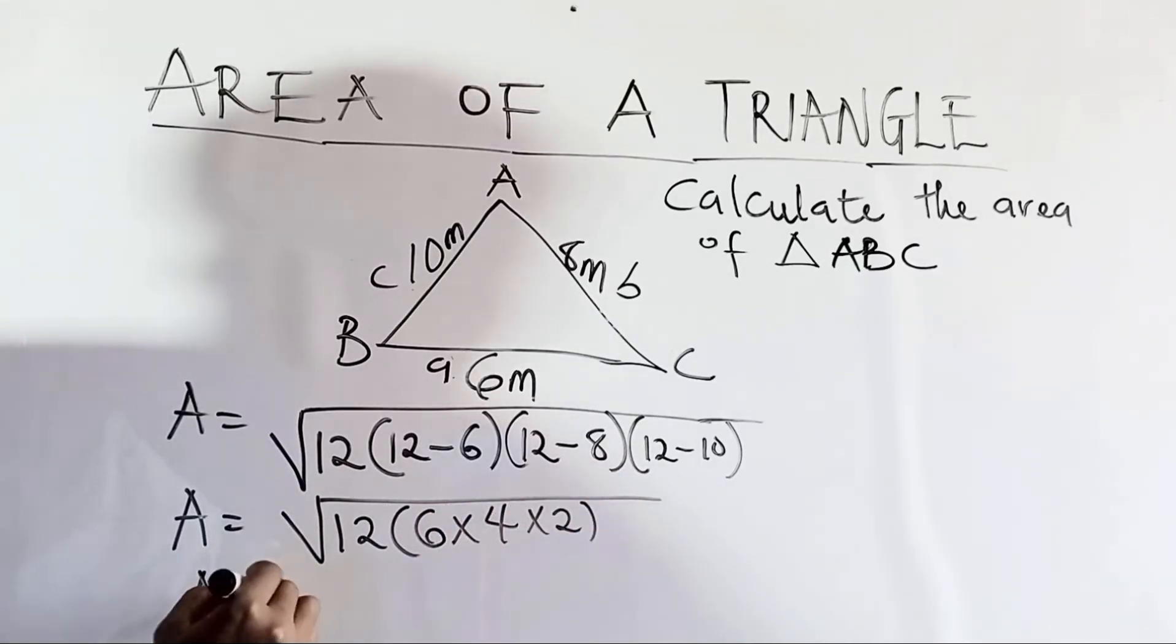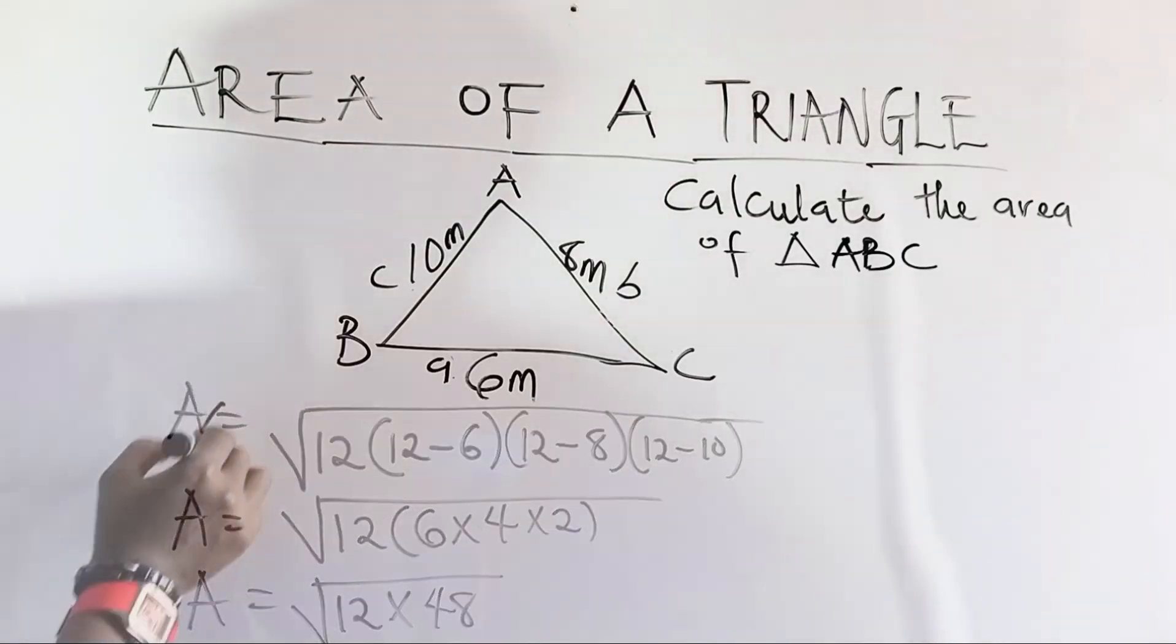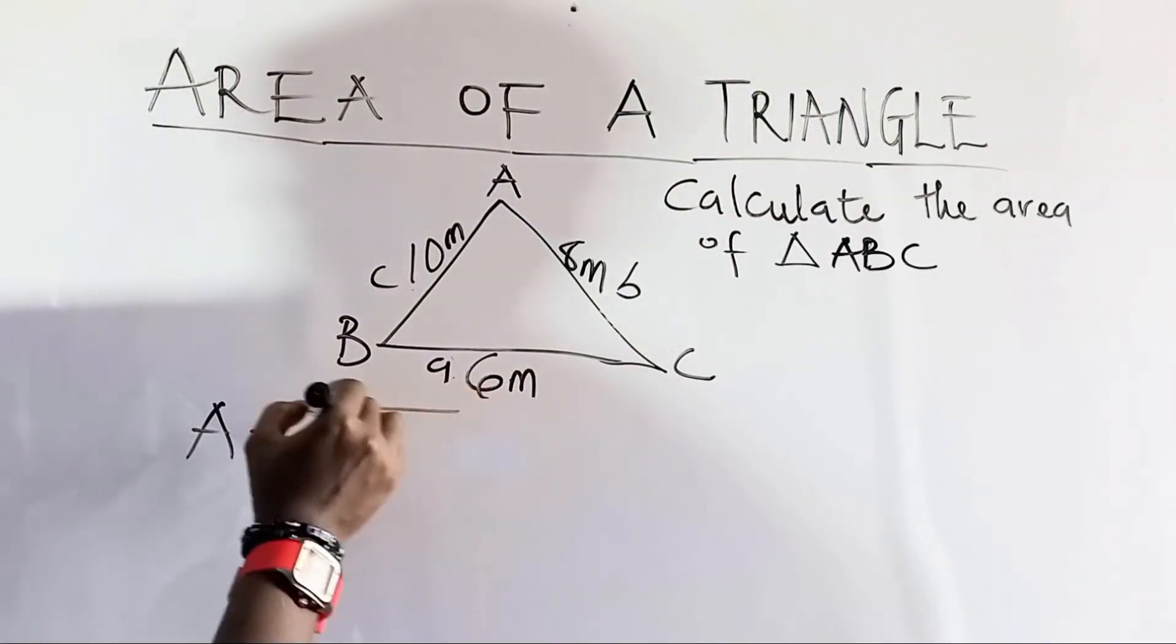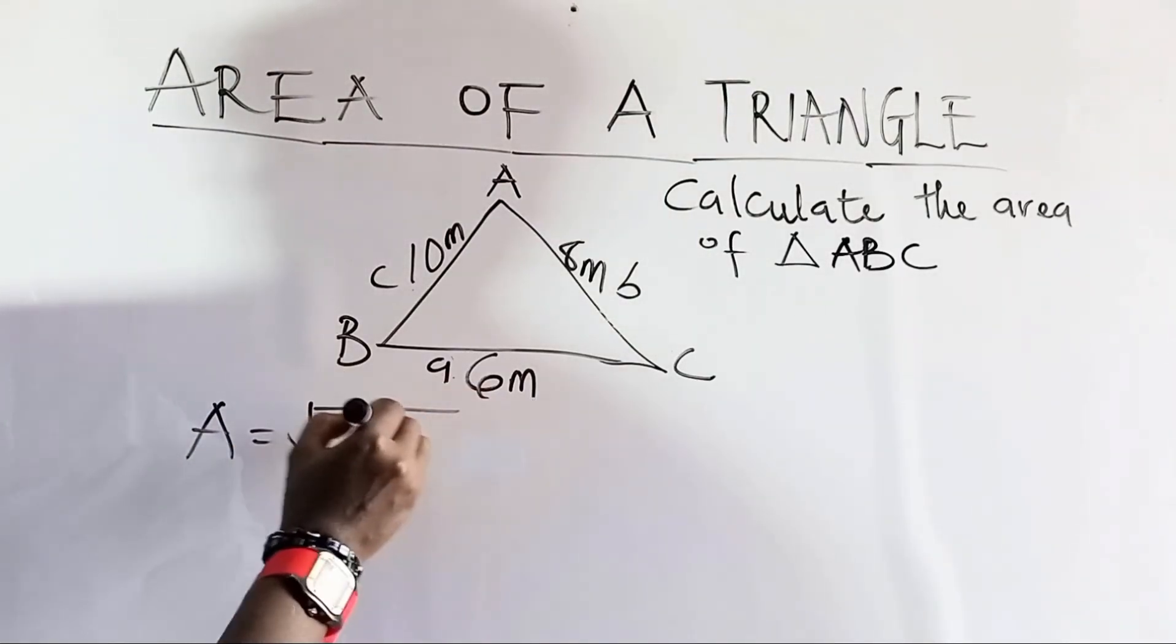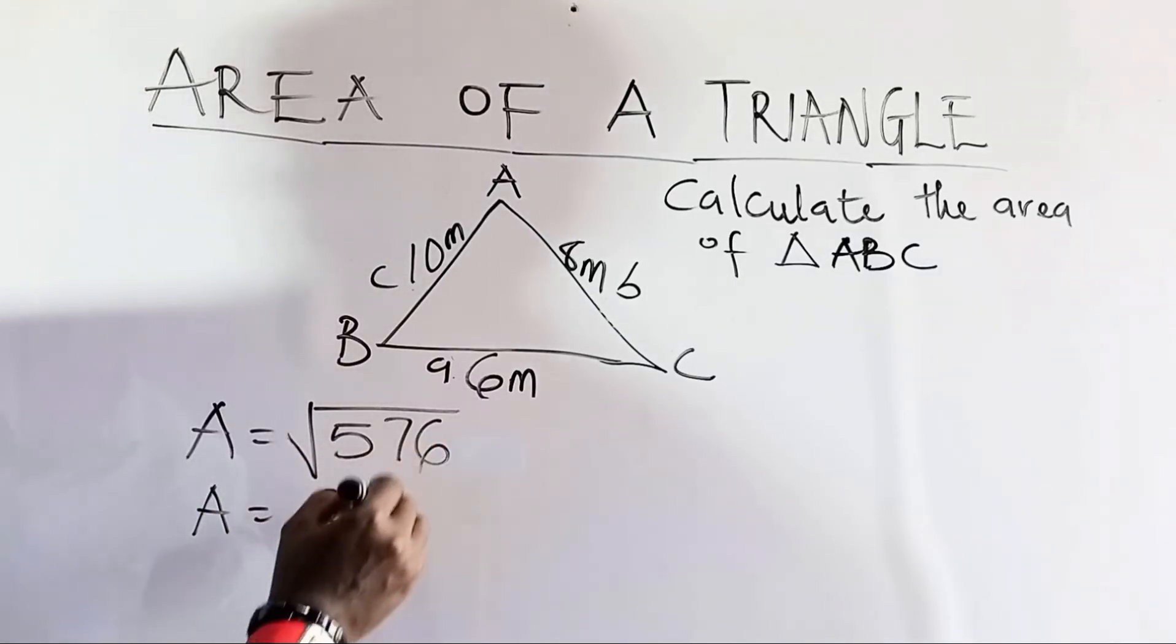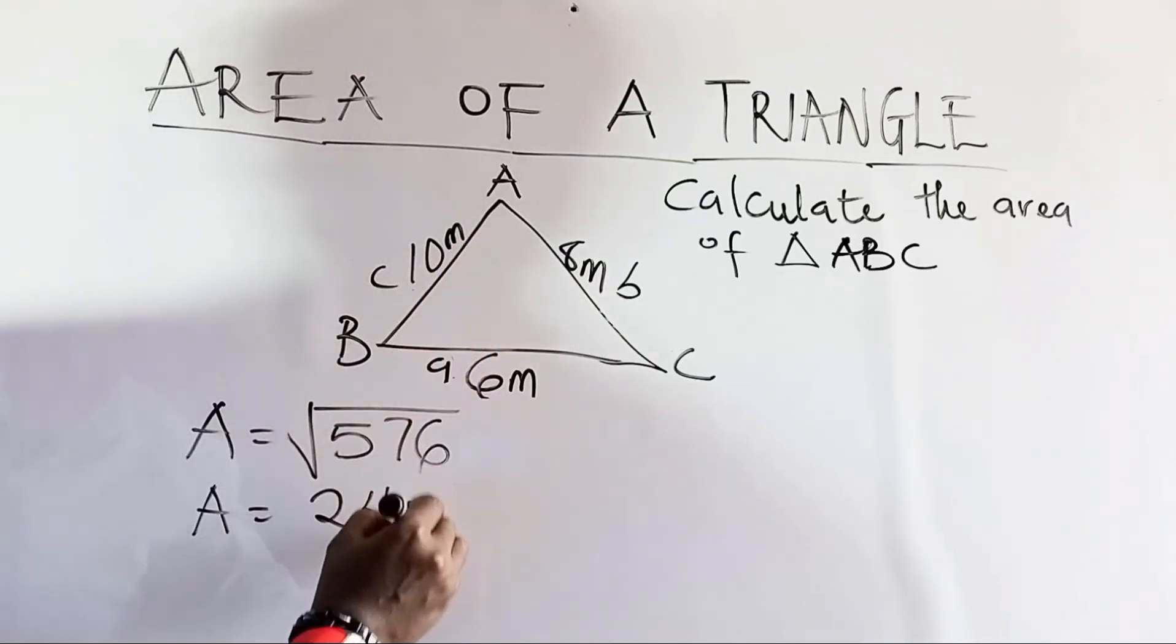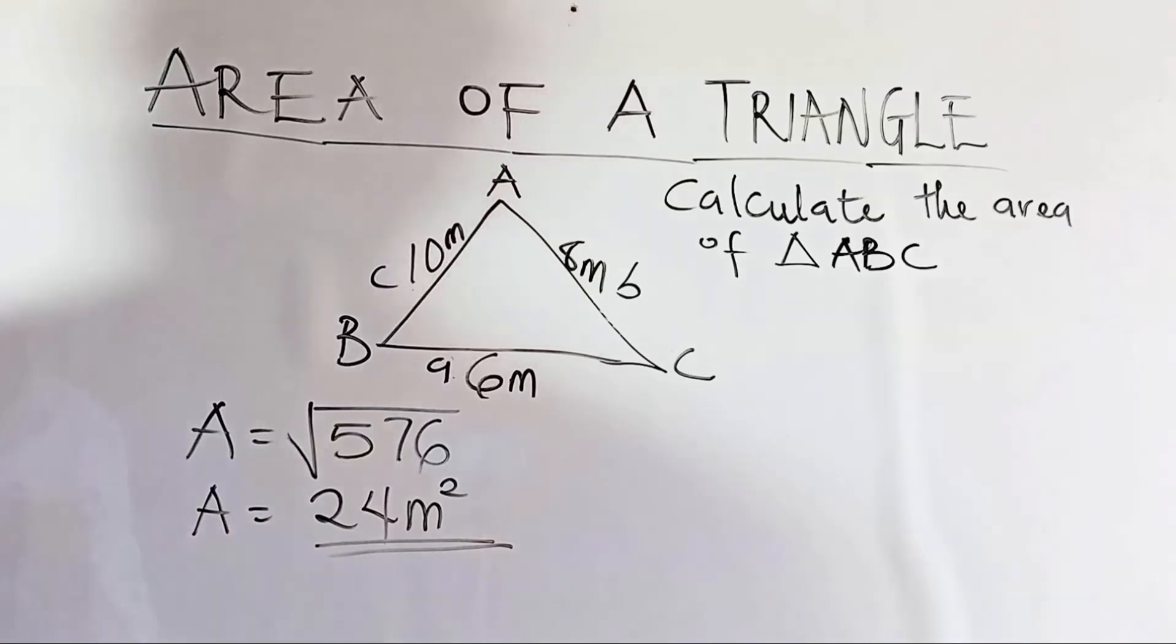So, the area equals the square root of 12 times 6 times 4 is 24. 24 times 2 is 48. 12 times 48. Area, therefore, now becomes the square root of 12 times 48 to give us 576. Now we find the square root of 576. Area equals the square root of 576 is 24. Therefore, the area of this triangle is 24 meters square as the answer.